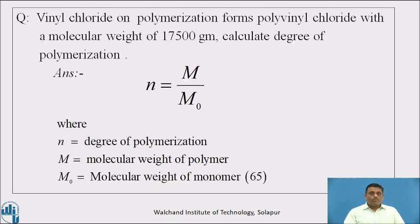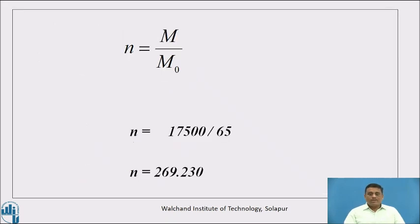Another numerical: Vinyl chloride on polymerization forms polyvinyl chloride with a molecular weight of 17500 g. Calculate its degree of polymerization. Using n = M / M₀, the molecular weight of the monomer vinyl chloride is 65. Therefore, n = 17500 / 65 = 269.23. We have now practiced both calculating degree of polymerization given molecular weight, and calculating molecular weight given degree of polymerization.